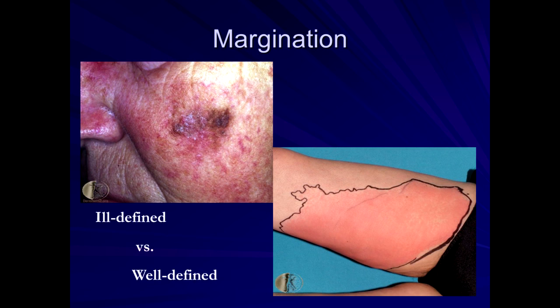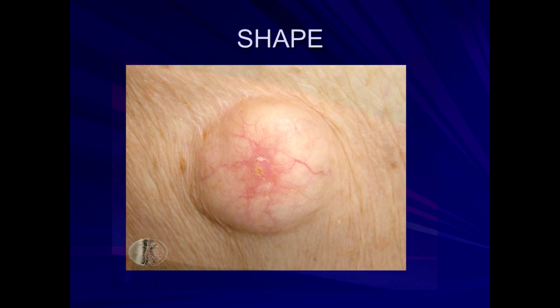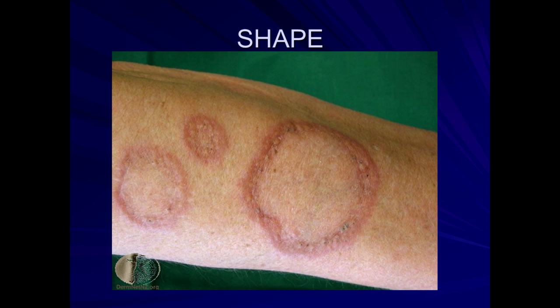This might be cellulitis — soft tissue infection due to staph or strep. Morphology is described based on shape. This is a ring-shaped configuration — so-called annular (A-N-N-U-L-A-R). This is an annular plaque; scaly annular plaques might be seen in tinea corporis, fungal infection of the skin, or a variety of other conditions. This is said to be serpiginous, meaning almost like a winding snake-like configuration of the skin, which could be due to a parasitic infection.